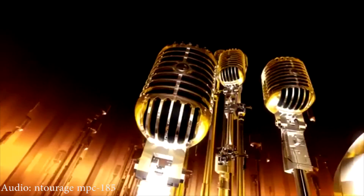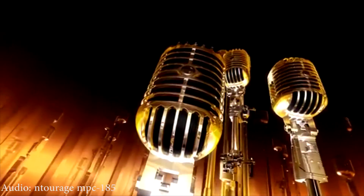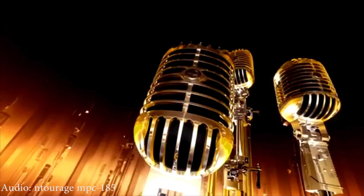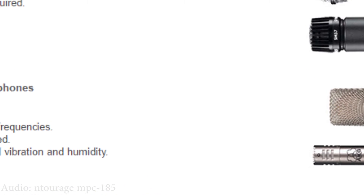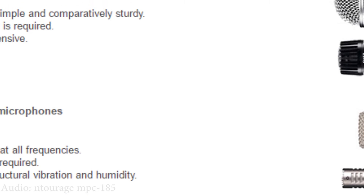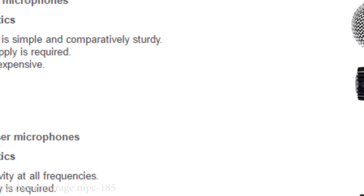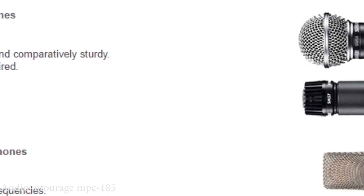If you can understand the simple idea that we are changing sound, which consists of air pressure variations, into an electrical signal, which consists of voltage variations, then it should not be difficult to understand. For this example, we will be covering dynamic microphones, which is just one type, but they're the most basic and most common in stage and theater settings — areas with noise.